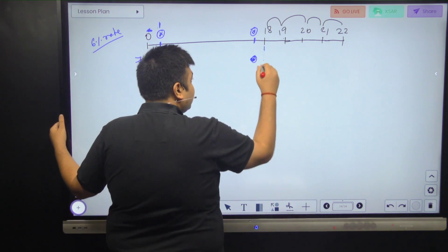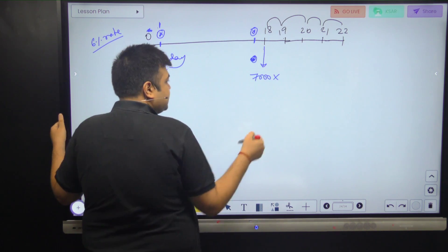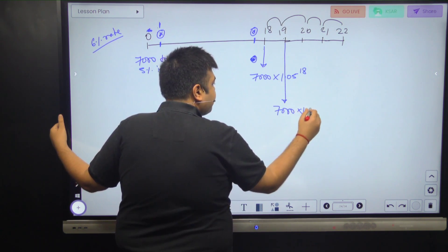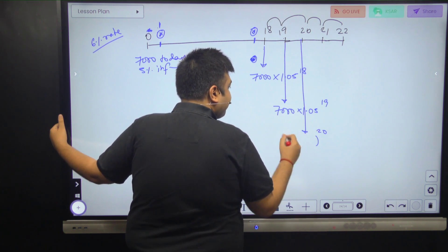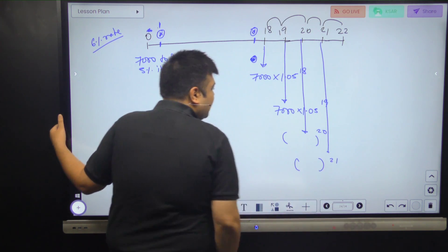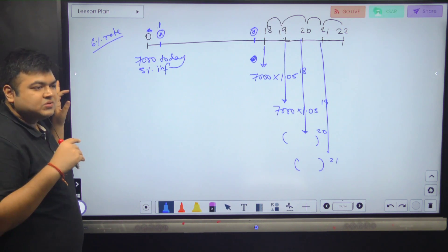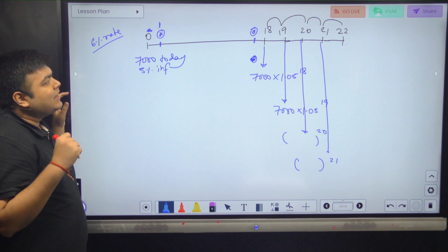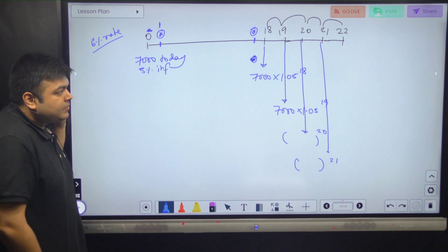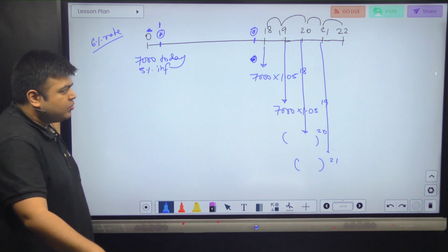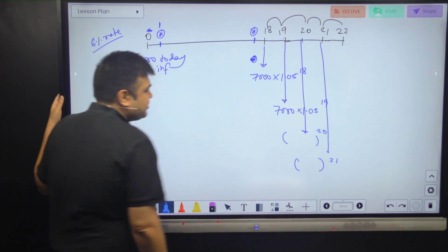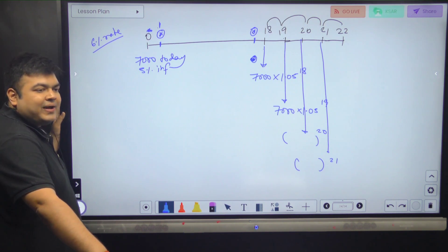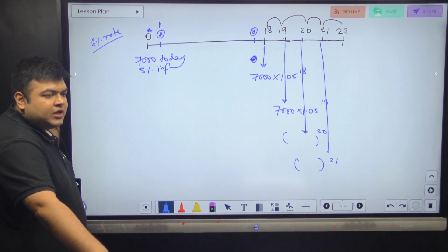So my cash flow over here is 7,000 into 1.05 to the power 18. I will do the question without taking 7,000. I can multiply 7,000 at the end of the question. That makes your calculations faster. I will not do 7,000 into into into every time. How do I go about with this calculation? You can get the amount into 1.05 into 1.05 into 1.05. You can do that too. Now, how would I do this question on the calculator? Since my cash flow is not constant at 18, 19, 20, 21, I will have to use the CF function.